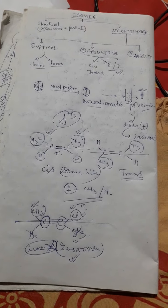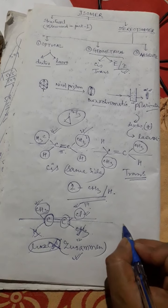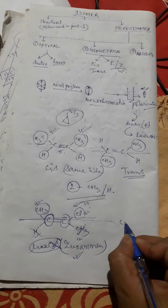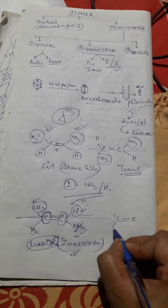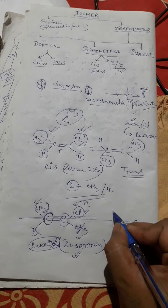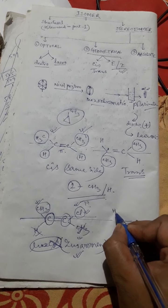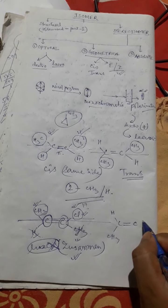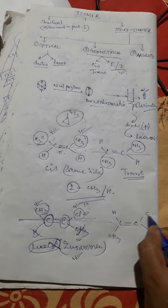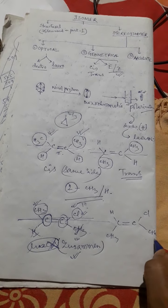If the two bulkier groups are on the opposite sides of the plane, then it is entgegen. For example, suppose we have H and CH3 on one carbon, and Cl and CH3 on the other carbon.